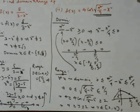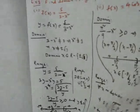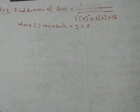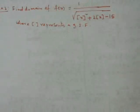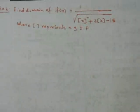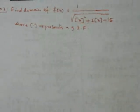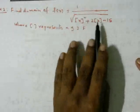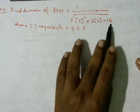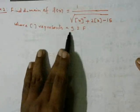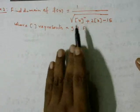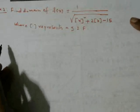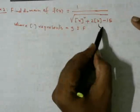Now for the next question — a very good one, also found in the NCERT book: find the domain of f(x) = 1/√(⌊x⌋² + 2⌊x⌋ - 15), where ⌊x⌋ denotes the greatest integer function.